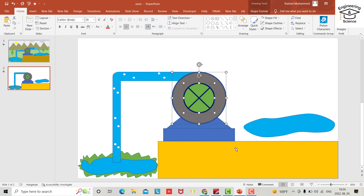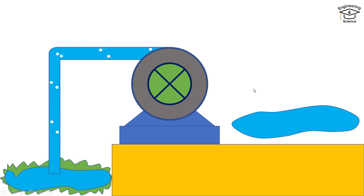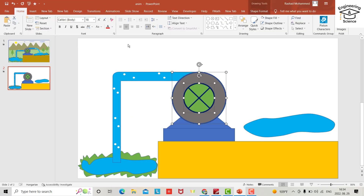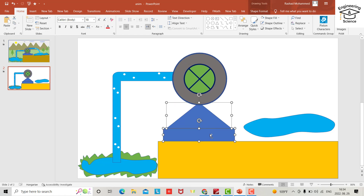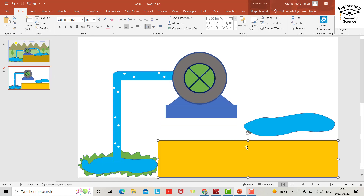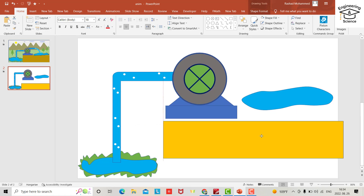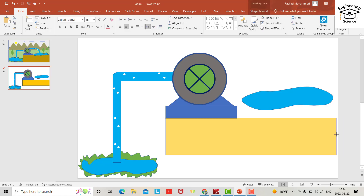We need to take these two bubbles behind the pump by bringing the pump to the front. Bring to front — yes, now it's good. I want to bring the pump to higher elevation.